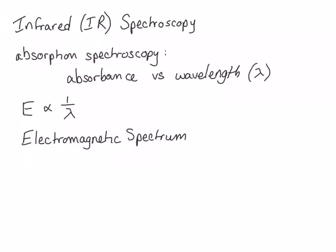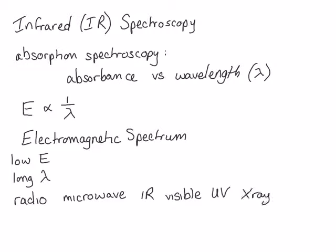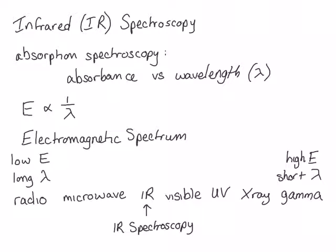At the low-energy or high-wavelength end of the spectrum, we have radio waves, followed by microwave, IR, visible, UV, X-ray, and finally gamma. IR spectroscopy looks at the ability of molecules to absorb IR radiation. Later this semester, we'll look at a type of spectroscopy called NMR, which uses radio waves. Next semester, we'll look at UV spectroscopy, which looks at the absorbance of UV.